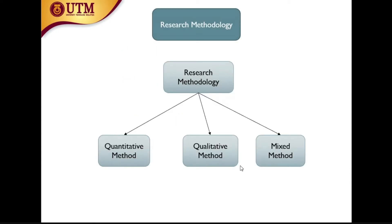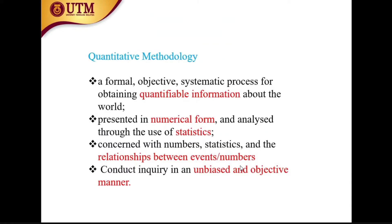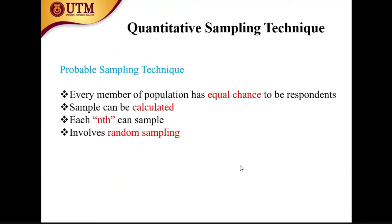Research methodology basics: quantitative methodology deals with numerical results — numbers like 0, 1, 2, 3, 4, 5. It examines relationships between events or numbers. For quantitative research, the sampling technique used is probabilistic sampling, meaning there is a probability of getting the chance for everyone to be your respondent. Types of probabilistic sampling include simple random sampling — for example, from 40 students, you choose those whose ID number ends with 6.